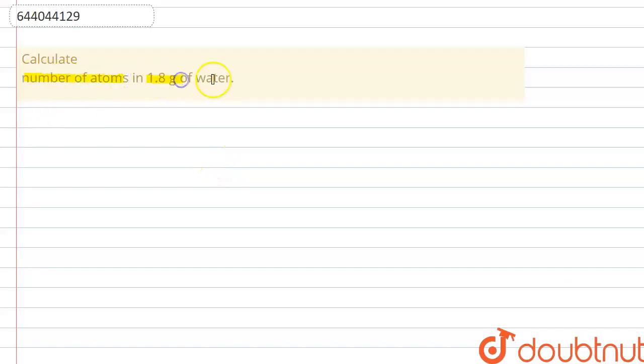the number of atoms in 1.8 grams of water. In this question, they are asking us to calculate the number of atoms in the given mass, which is 1.8 grams of water. The given mass of H2O is 1.8 grams, and we have to calculate the number of atoms in it. We will